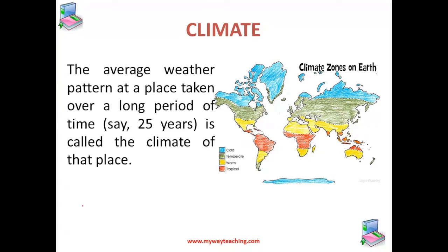The scientists called meteorologists record the weather at various places every day. The records of the weather over the past several decades have been preserved. These records help the meteorologist to determine the weather pattern at a place. The average weather pattern at a place taken over a long period of time, say 25 years, is called the climate of that place.